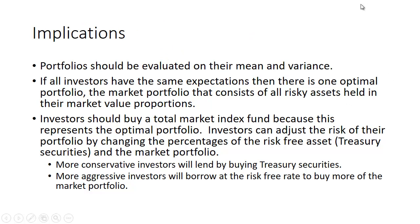What are the implications of modern portfolio theory? First, portfolios should be evaluated on their mean and variance. If all investors have the same expectations, there is one optimal portfolio — the market portfolio — consisting of all risky assets held in their market value proportions. Investors should buy a total market index fund because this represents the optimal portfolio. Investors can adjust risk by changing the percentage of the risk-free asset and market portfolio they hold. More conservative investors lend by buying treasury securities; more aggressive investors borrow at the risk-free rate to buy more of the market portfolio.